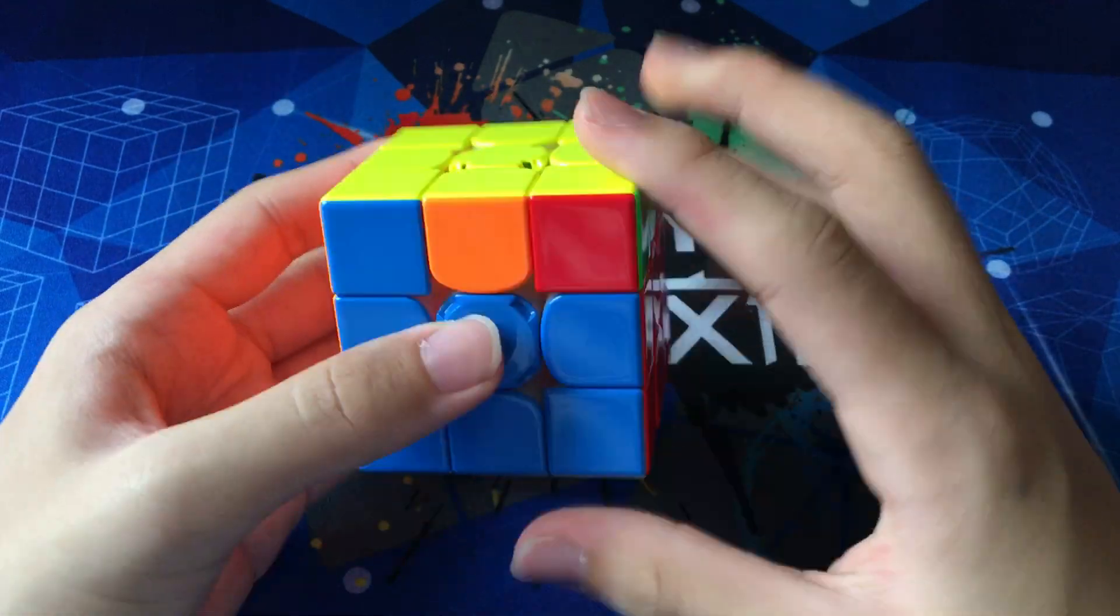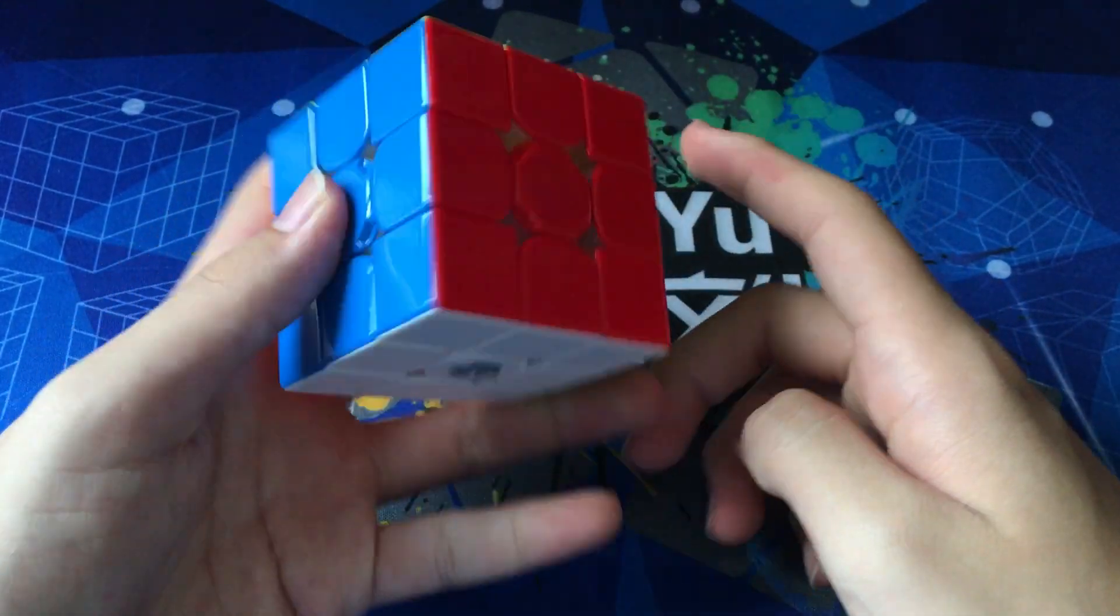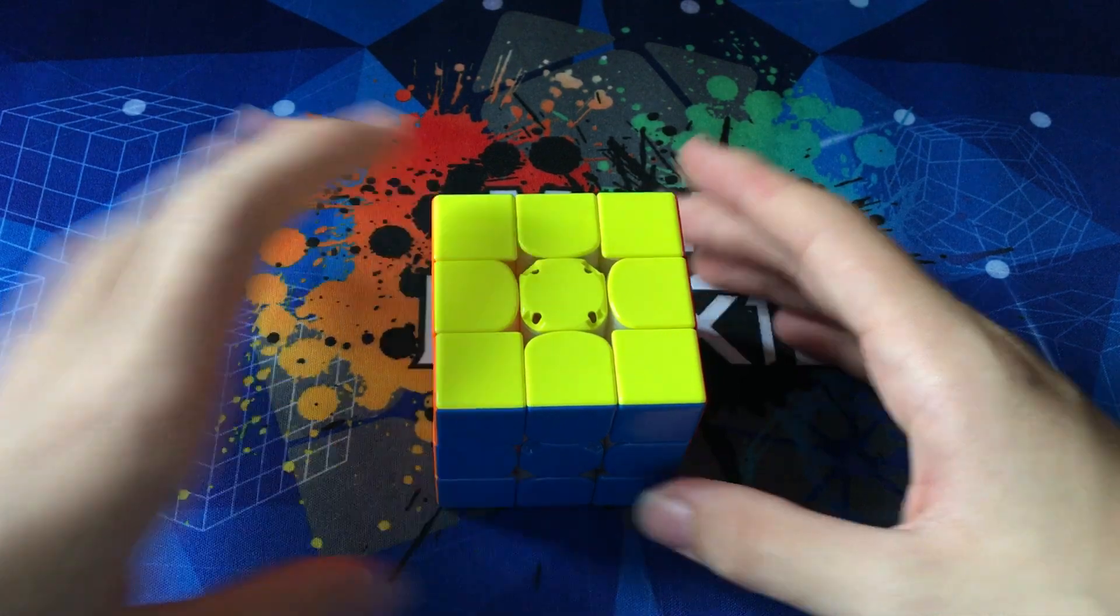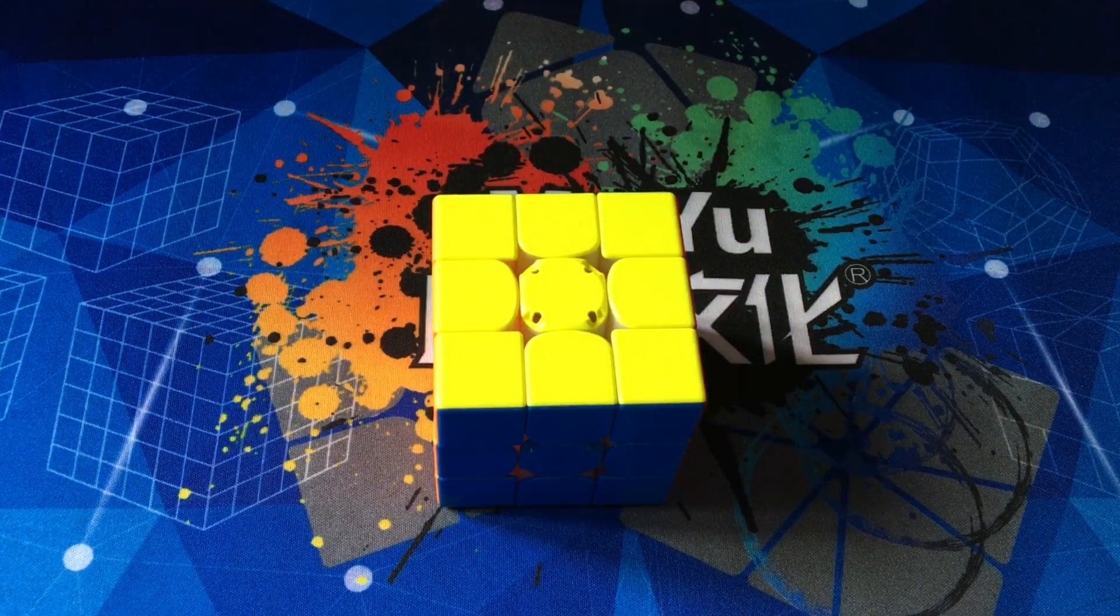Into this full step last layer with an F-inverse sexy F-prime—sorry, yeah, F-inverse sexy F-prime—and then a G-perm.